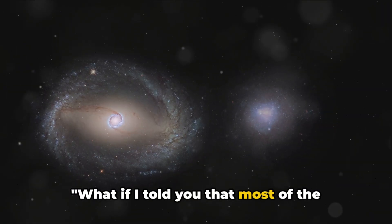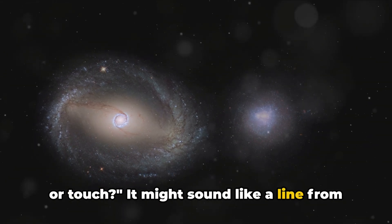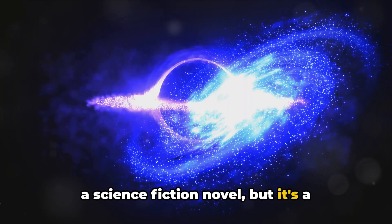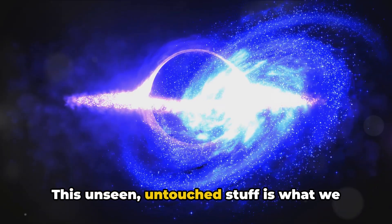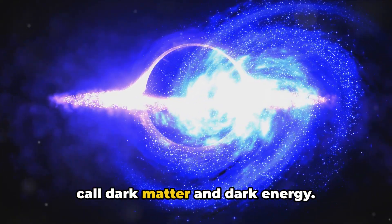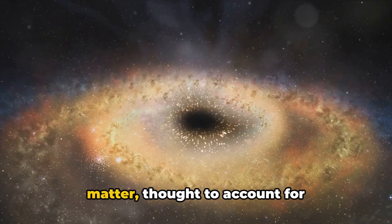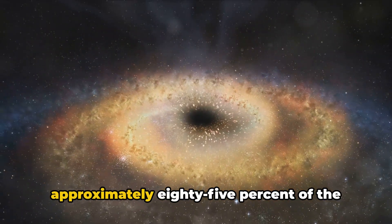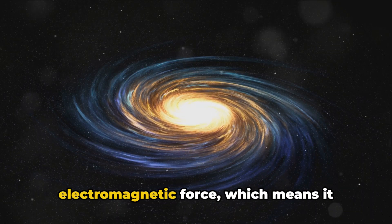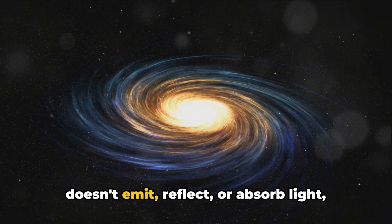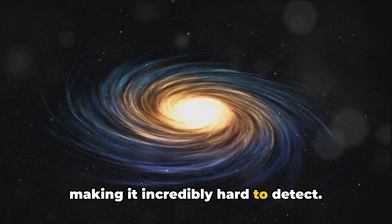What if I told you that most of the universe is made up of stuff we can't see or touch? It might sound like a line from a science fiction novel, but it's a fundamental truth of our universe. This unseen, untouched stuff is what we call dark matter and dark energy. Dark matter is a hypothetical form of matter thought to account for approximately 85% of the matter in the universe. It doesn't interact with the electromagnetic force, which means it doesn't emit, reflect or absorb light, making it incredibly hard to detect.